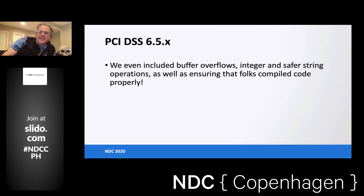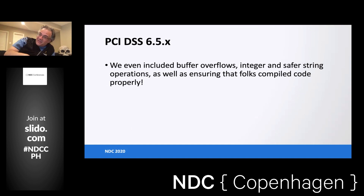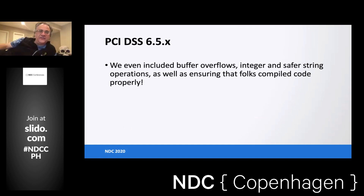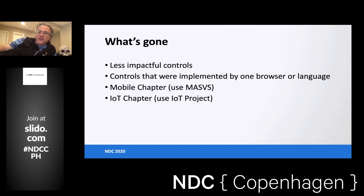We also added in the PCI requirements. It's not super web-centric, but it's needed for PCI support because we're trying to help replace the OWASP top 10 in PCI. We want to make PCI happy so they use ASVS instead. So we included buffer overflows, integer and string operations, and other things to ensure PCI compliance within our standard. They're not perfect maps to the standard, but we made PCI happy — and that's a big win.